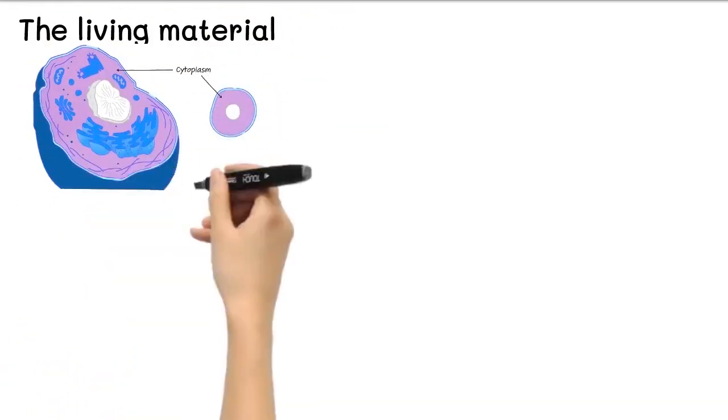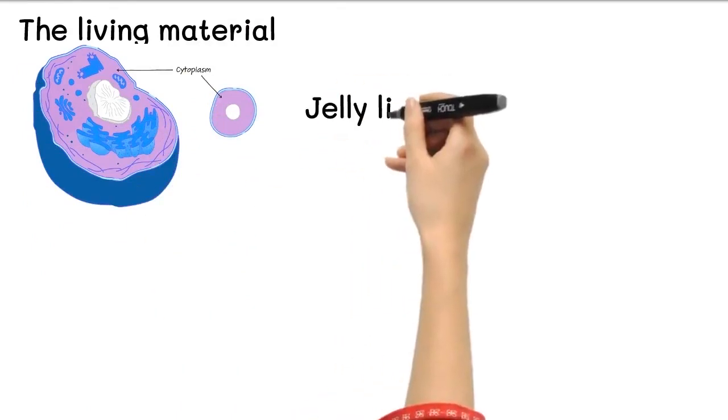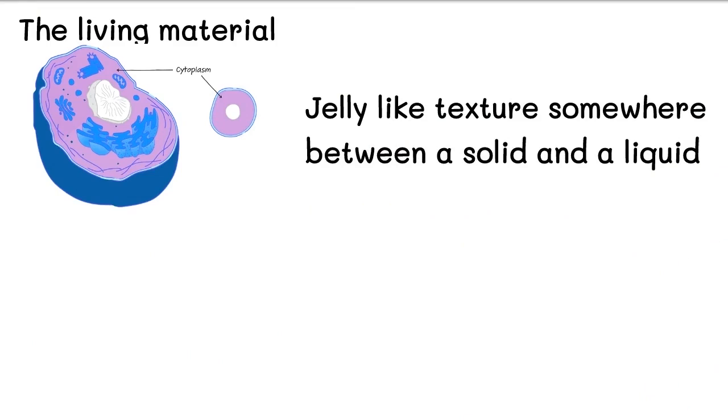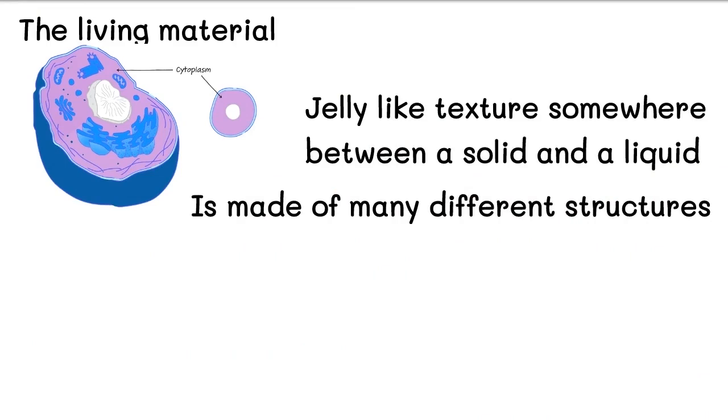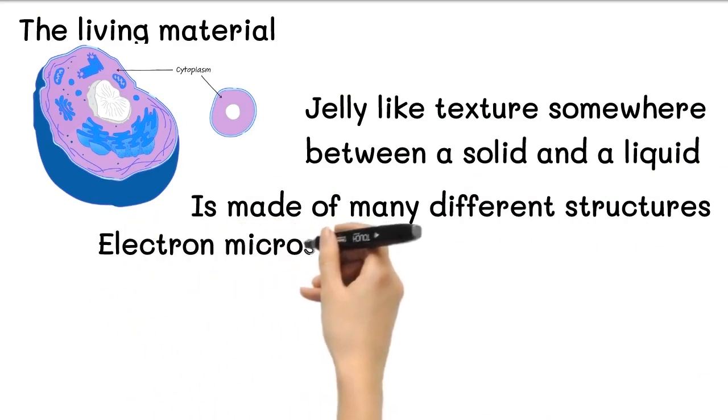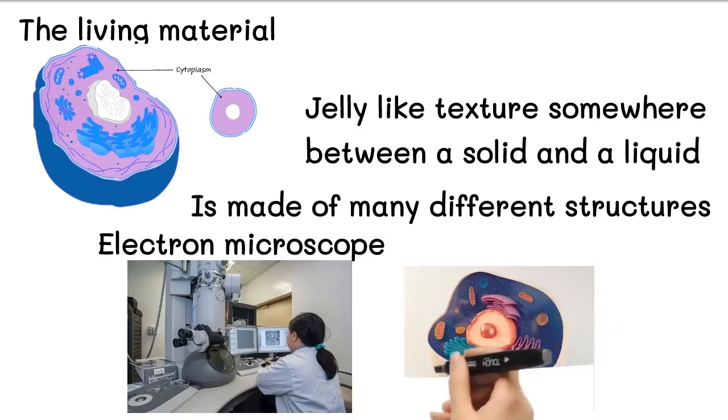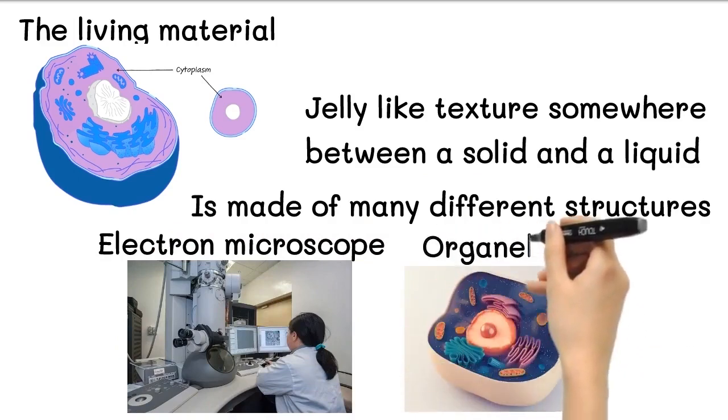The mix of a cell is called cytoplasm. It has a texture rather like sloppy jelly, in other words, somewhere between a solid and a liquid. It's a complex material made of many different structures. An electron microscope has a much higher magnification and can show the details of these structures, which are called organelles.